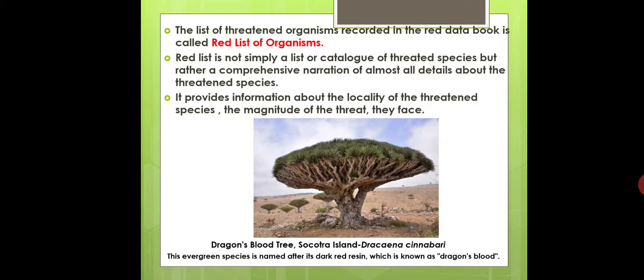It provides information about what types of threat each organism faces, the name of that organism, where it is present — the locality, distribution, habit, and habitat — all such things. And what is the reason for its endangered condition? All are explained in the Red List. It also provides information about the locality and magnitude of threat they face.